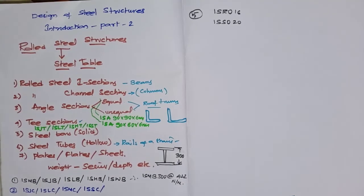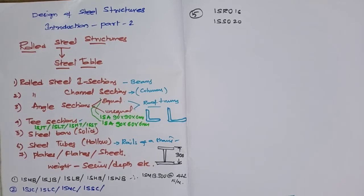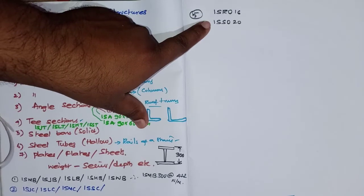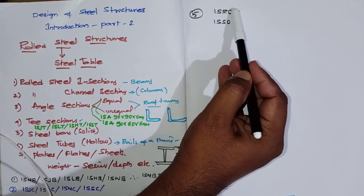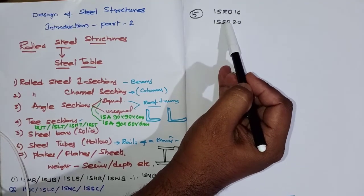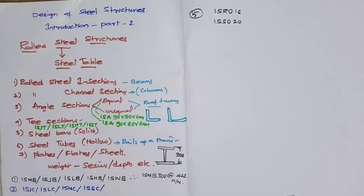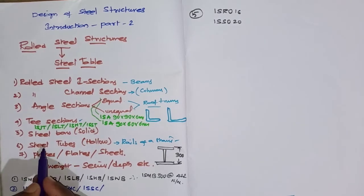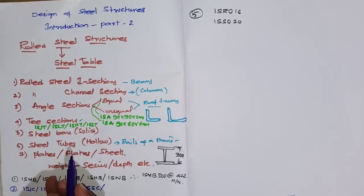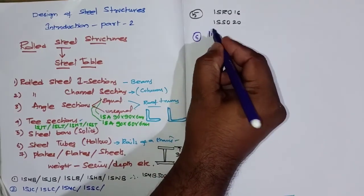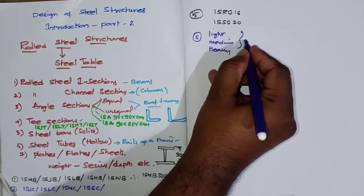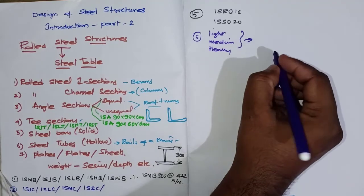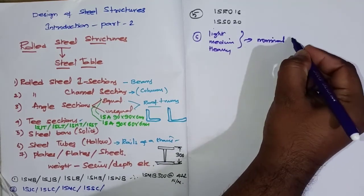For the classification of steel bars, which are solid, ISRO 16 refers to Indian Standard Round Bars of 16 mm diameter, and ISSQ 20 refers to Indian Standard Square Bars of 20 mm side. Steel tubes, which are hollow, are classified as light, medium, and heavy, and are designated by their nominal bore size.